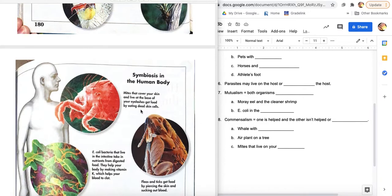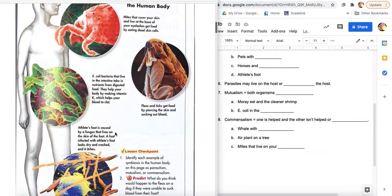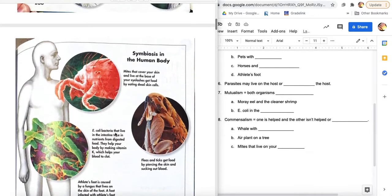Dust falls to the ground. My dead skin cells will fall off me. If a mite eats it, great. If a mite doesn't eat it, I don't care either way, guys. So that's why it's commensalism. It doesn't matter to me.